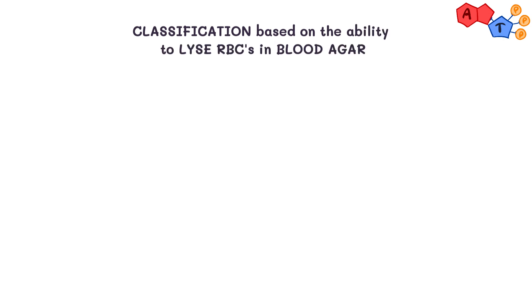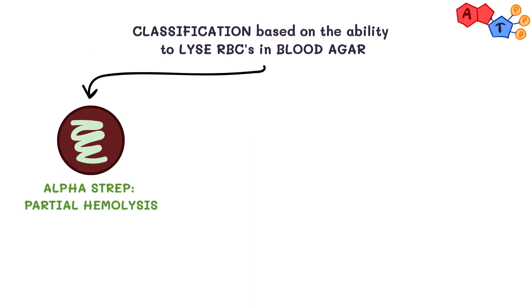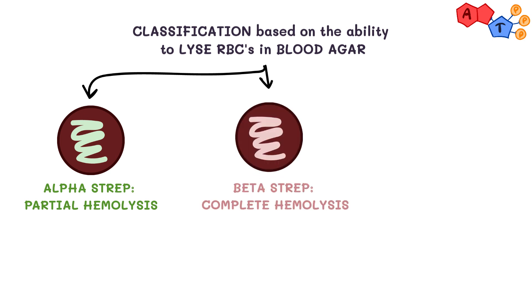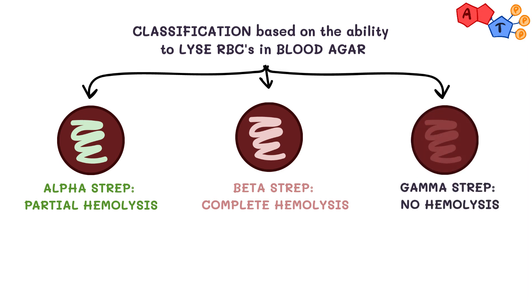As for strep classification, a commonly used classification is based on their ability to lyse red blood cells in blood agar. On that basis, we can classify them into three groups: Alpha, which is partial hemolysis and turns the agar to a greenish color; Beta, which is complete hemolysis where the agar turns clear; and lastly Gamma, where there is no hemolysis so we don't expect a color change.